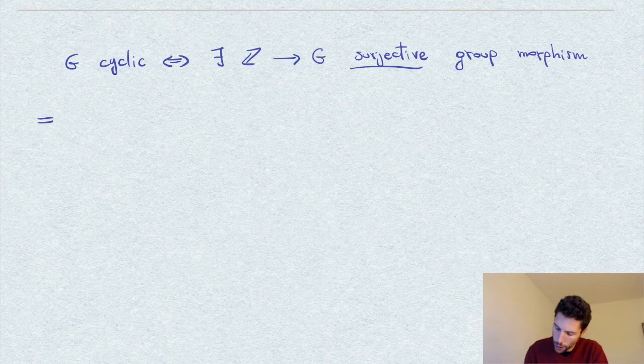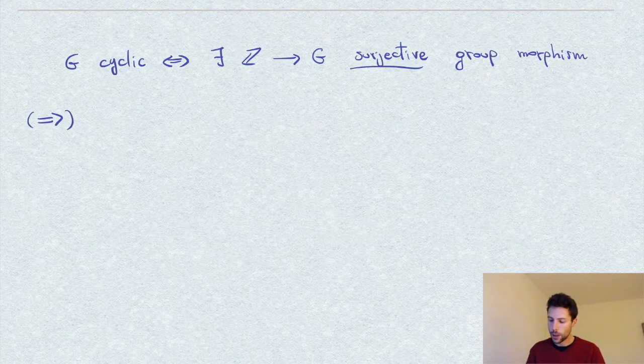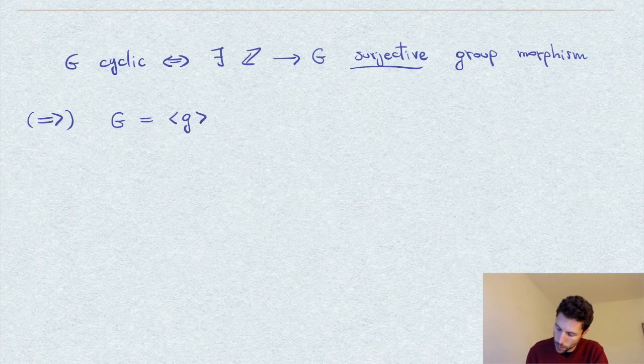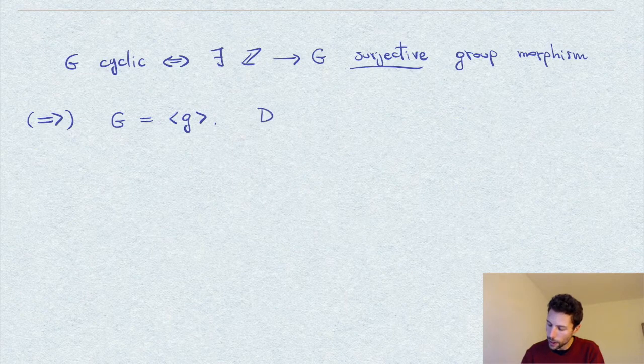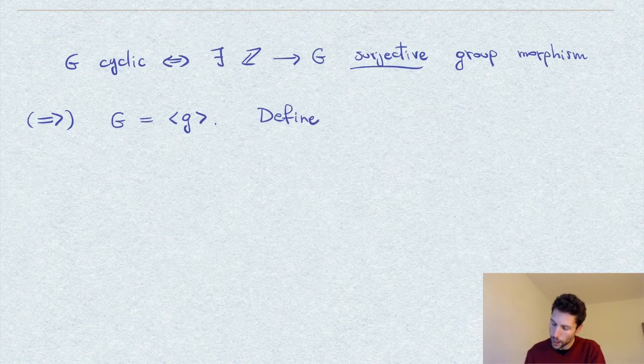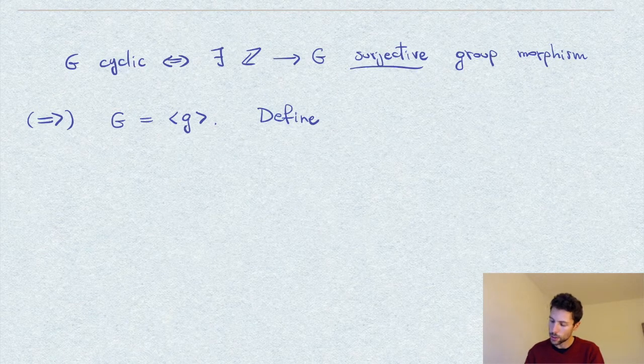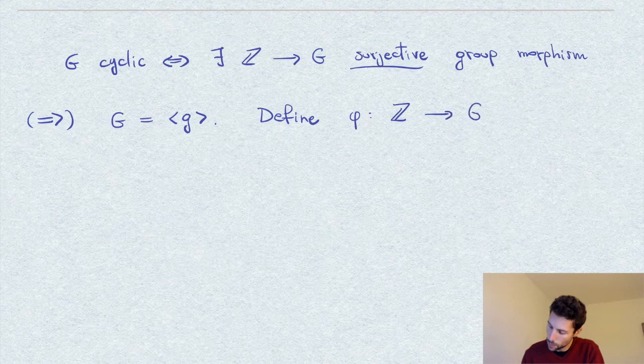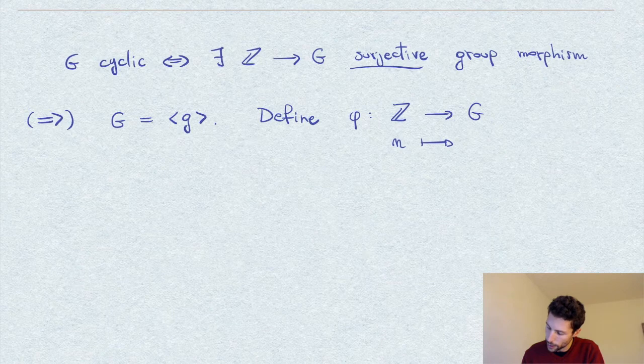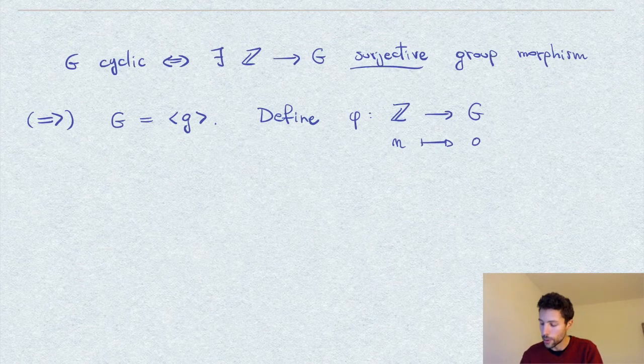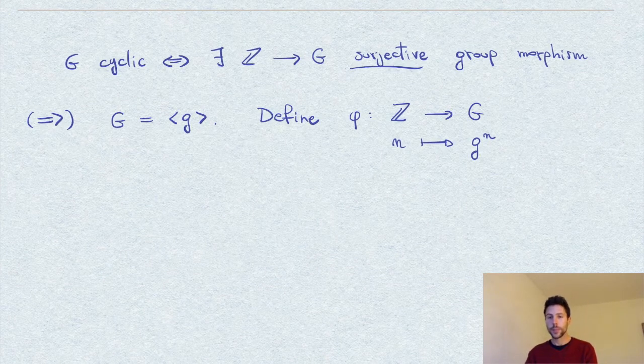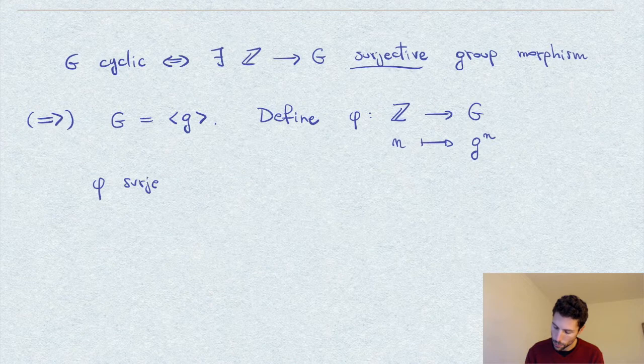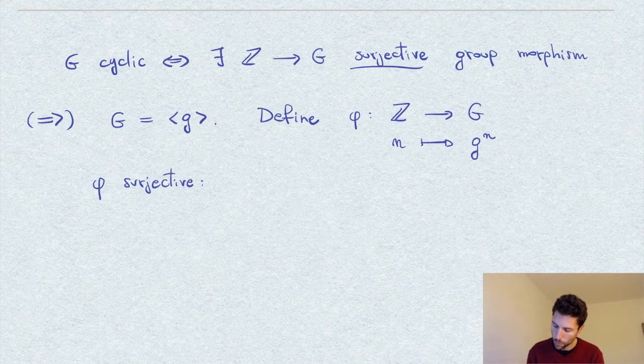So let's proceed and prove now the only if part of the statement. Here we are supposing that G is cyclic, and therefore it can be written as the group generated by some element g. I will define explicitly our morphism from the group of integers to G. Define the map phi from Z to G that associates the number n to g to the n. So as you can see, this map is for sure surjective, right?